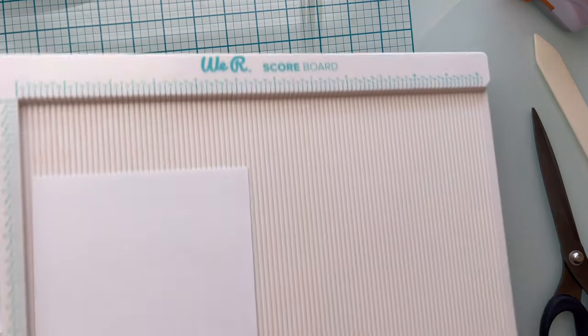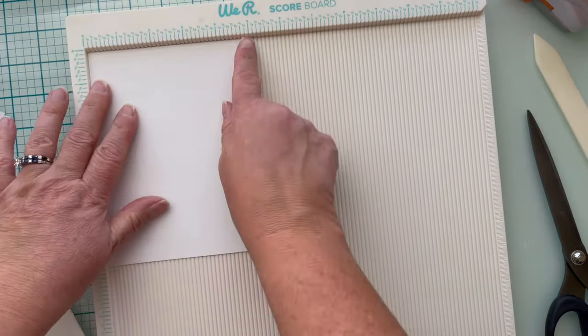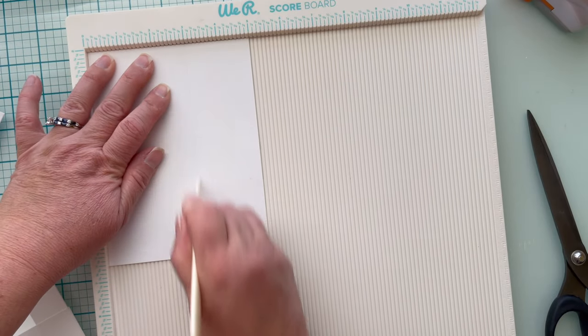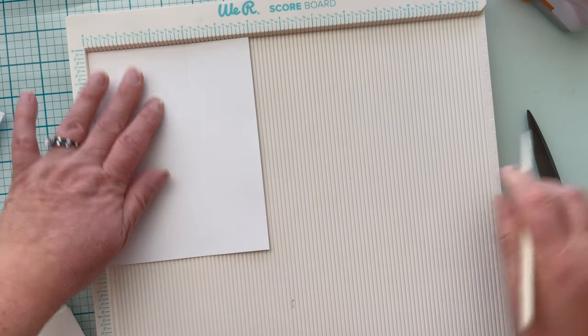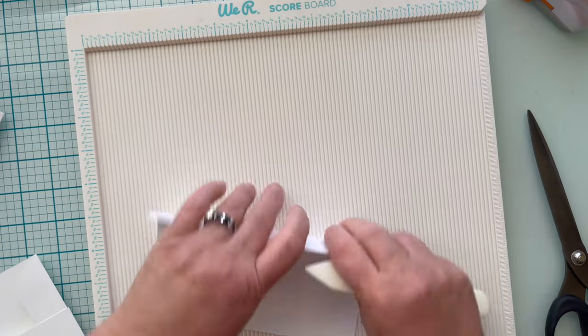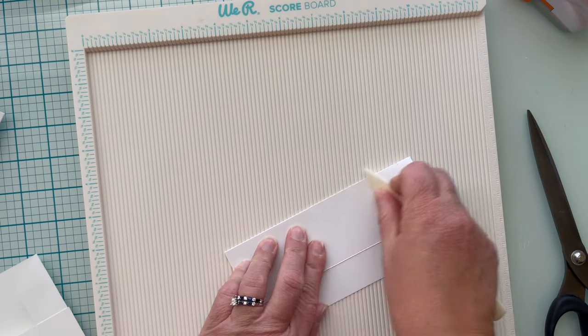We have one more score to do, so with my scoreboard I'm going to line it up with the five inch side and score at three inches and go ahead and burnish that edge down.